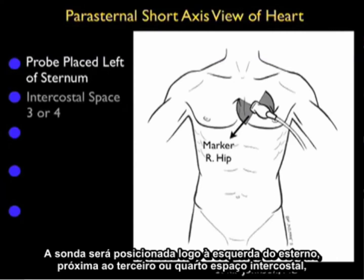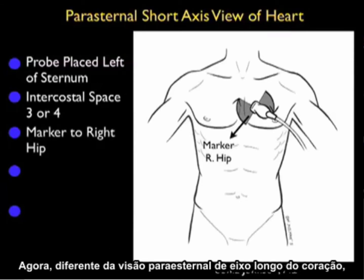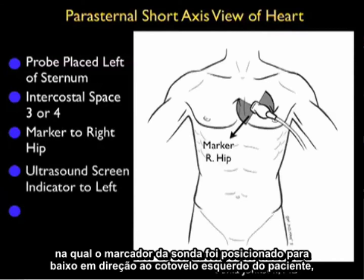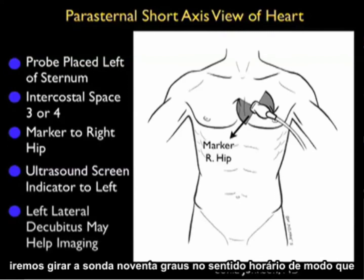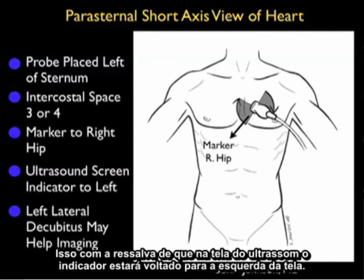The probe will be placed just left of the sternum at about intercostal space 3 or 4, as shown in the pictorial here to the right. In variance to the parasternal long axis view, where the probe marker was positioned down towards the patient's left elbow, we'll swivel the probe 90 degrees clockwise so the marker is now down towards the patient's right hip. That's with the caveat that the ultrasound screen indicator is positioned towards the left of the screen.